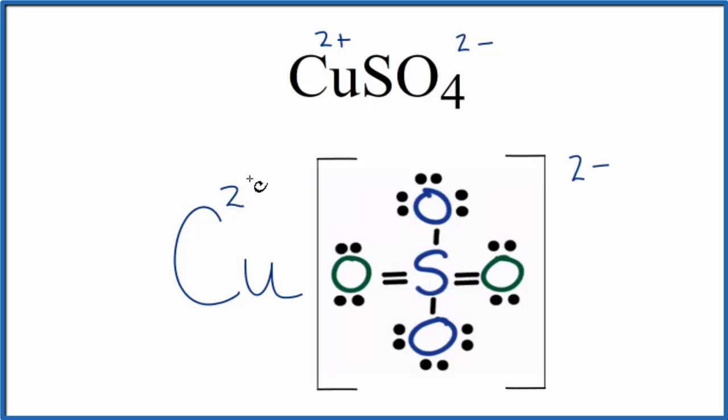You could also write the charge on the copper, and sometimes you'll see brackets around the copper. We have our positive copper(II) ion and our negative sulfate ion. Since we have a positive and negative ion, they're attracted to each other. That's what forms the ionic bond between the copper and the sulfate.